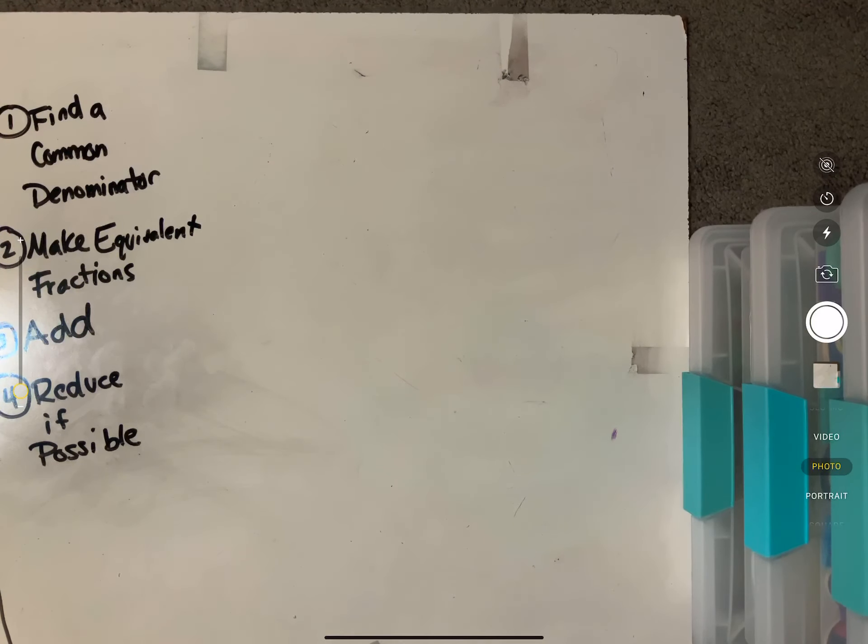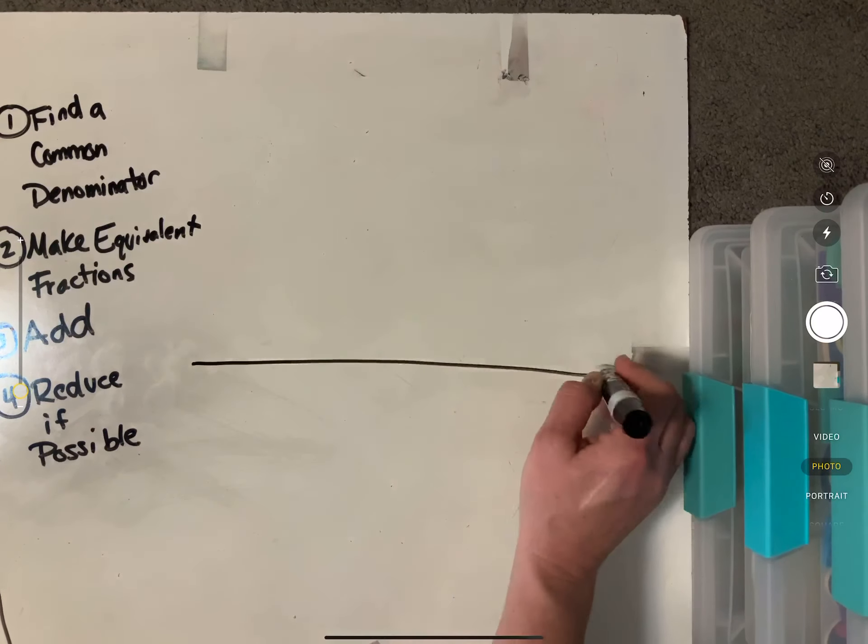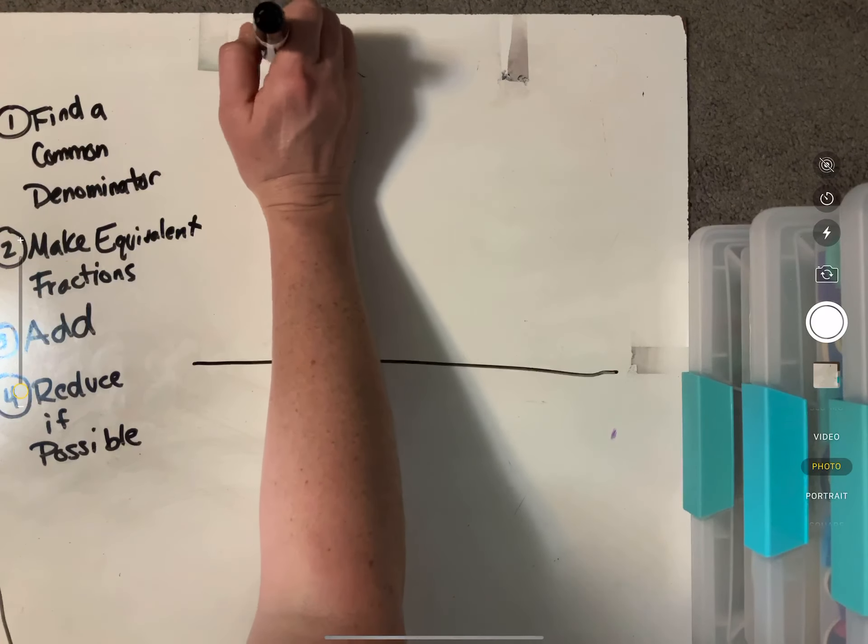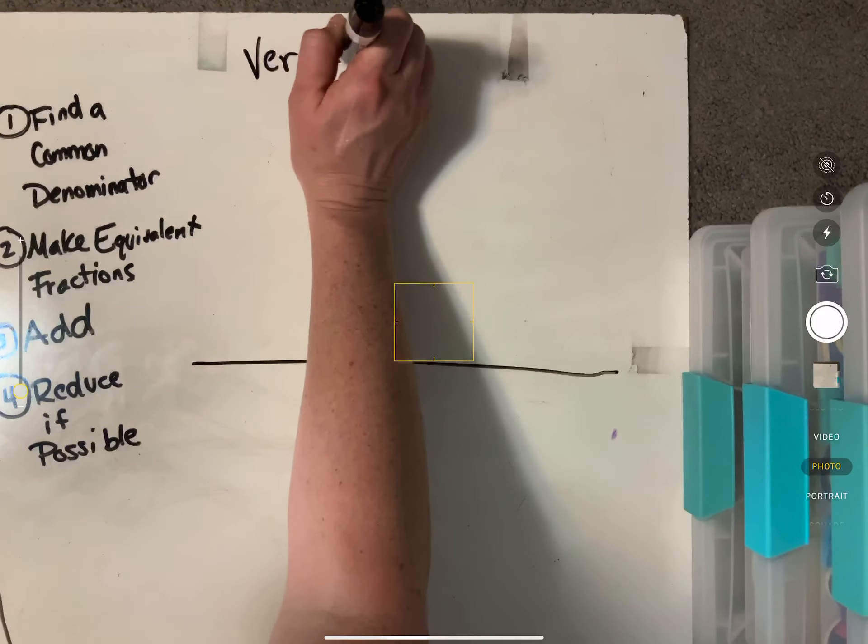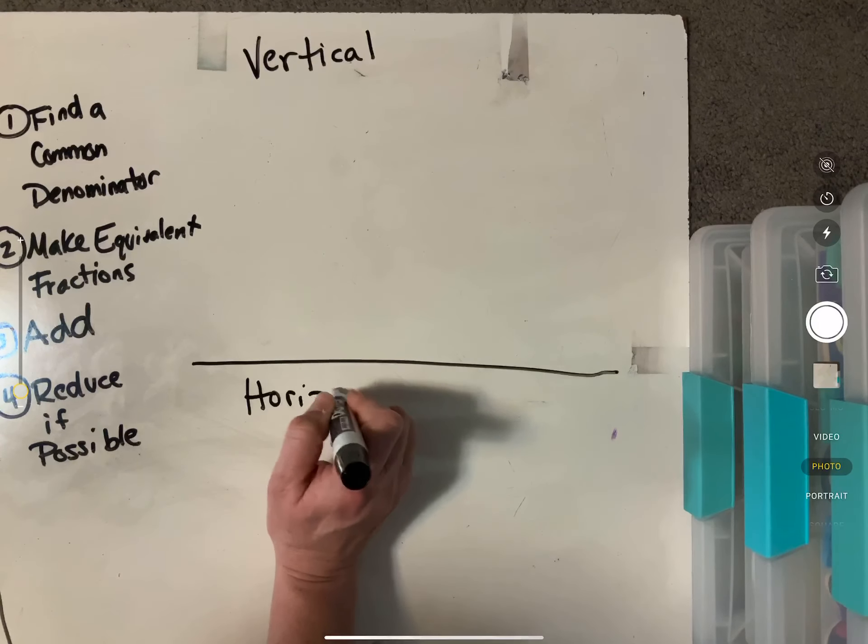So we are going to focus on the horizontal method a little bit today, just to kind of give you a feel for that. And again, I want to show you an example of how the vertical method and the horizontal method are the same and how they're different. So we'll do the vertical up here and the horizontal down here.